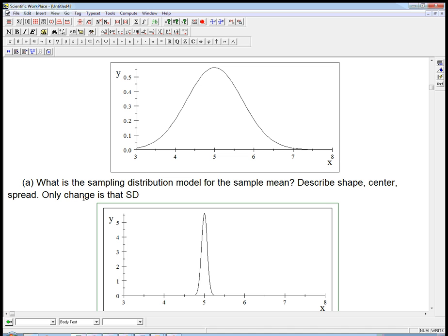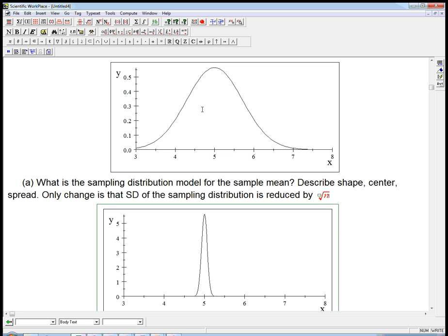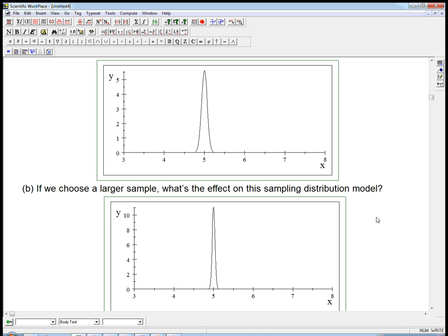So the only thing that changes is that the standard deviation of the sampling distribution is reduced compared to the sigma that we had up there by a factor of root n, where n is the sample size. And that's really the only difference. So a very special case of the central limit theorem, but one that can happen.